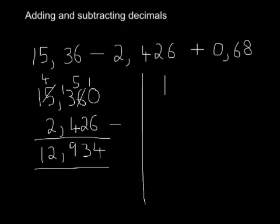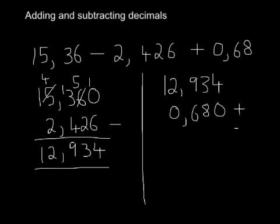We're going to take that number, 12.934, and we're just going to have to add the last part, which was 0.68. So once again, I must add a 0 so that we have the same number of decimals with both numbers.